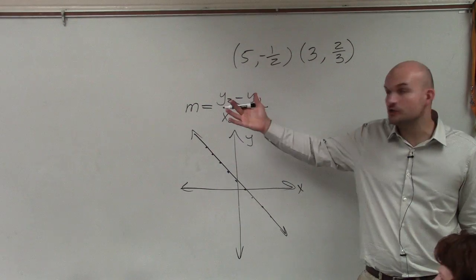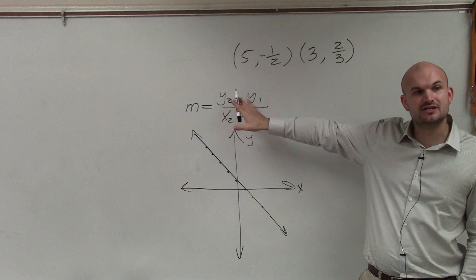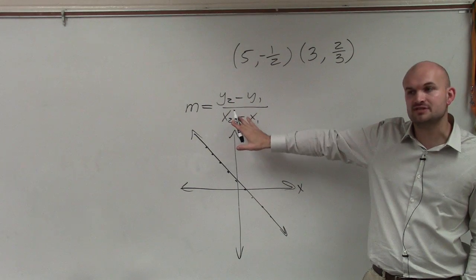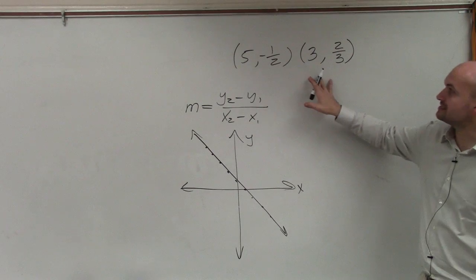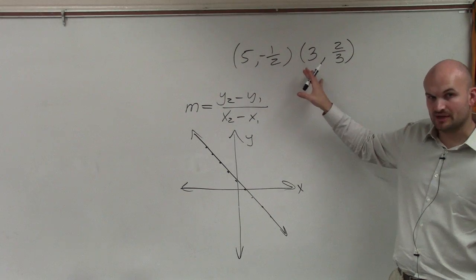So if we choose any two points, and we find the difference of the y-coordinates and the difference of the x-coordinates, that is going to produce us our slope. So in this example, I have two coordinate points.